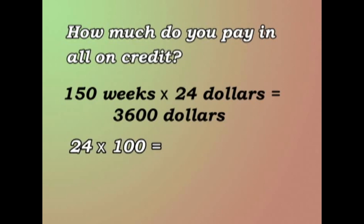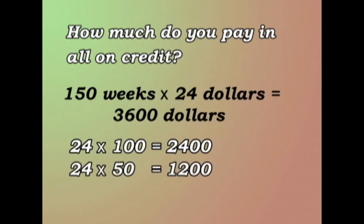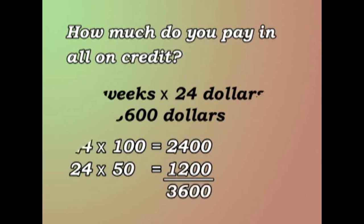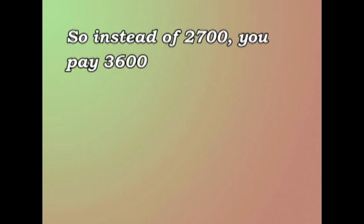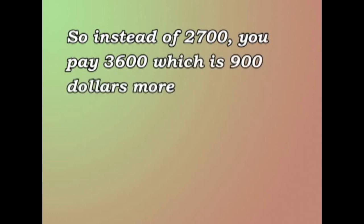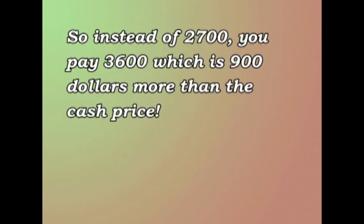I work it out like this: 24 times 100 — I just add two zeros, so that makes $2,400. Half of that is $1,200. So $2,400 plus $1,200 makes $3,600. So instead of $2,700 — the cash price — you're now paying $3,600. You're paying $900 more than the cash price.